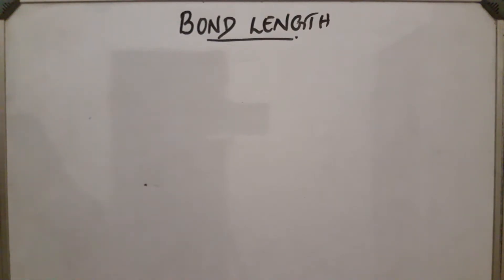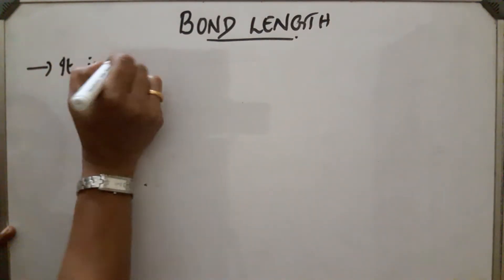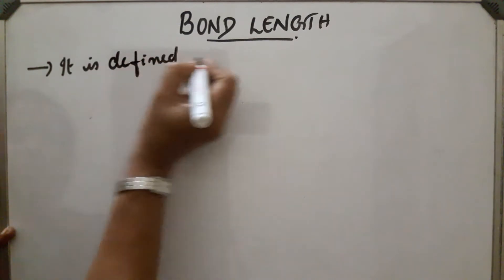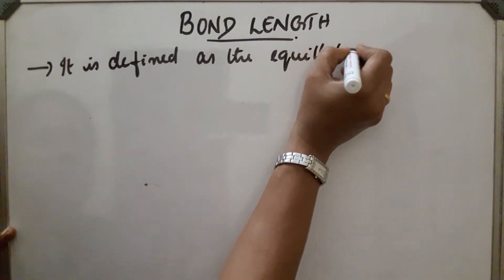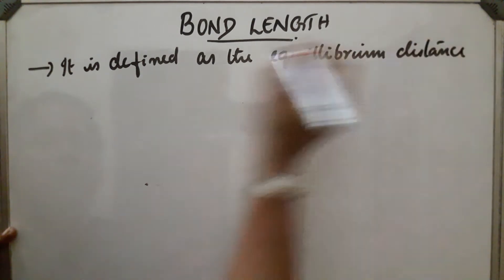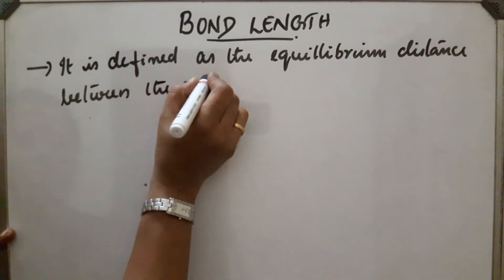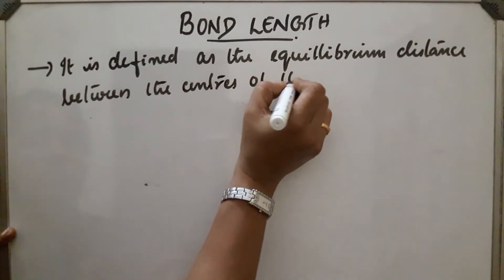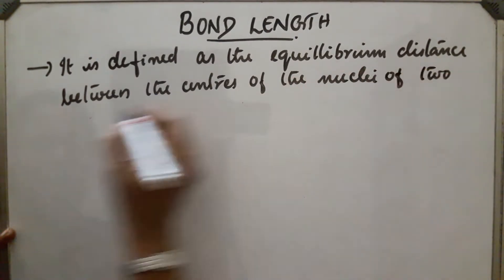Bond length is defined as the equilibrium distance between the centers of nuclei of two bonded atoms in a molecule.